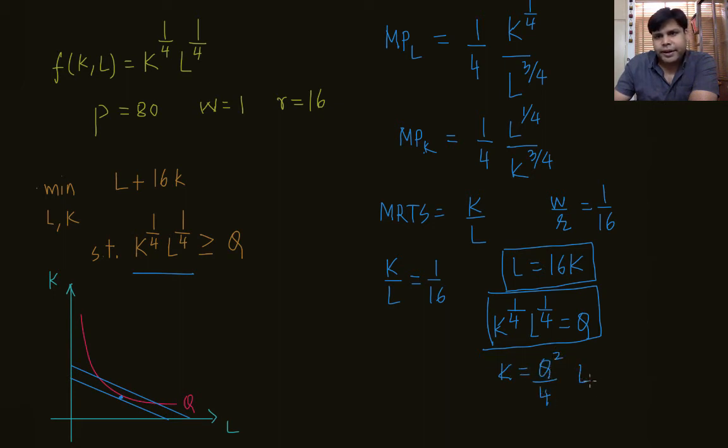Once we have this, we can figure out the cost function. The cost function C(q) equals wage times labor, which is 1 times 4 q squared, so that is 4 q squared, plus the rent times capital, which is 16 times q squared by 4. This gives us another 4 q squared, so the total cost is 8 q squared.